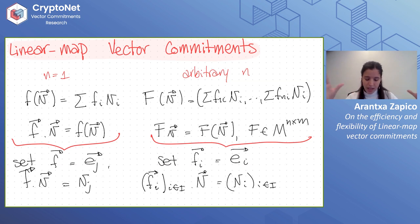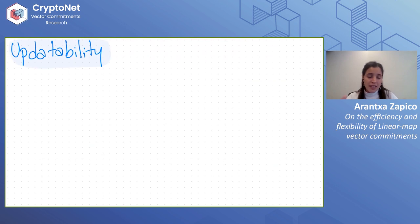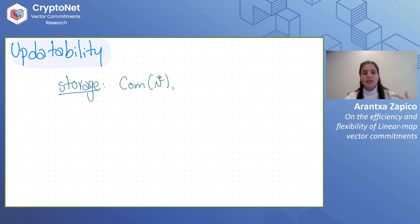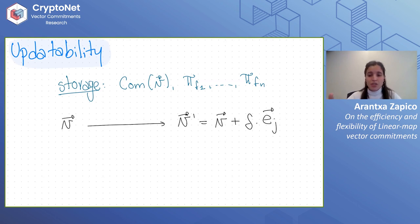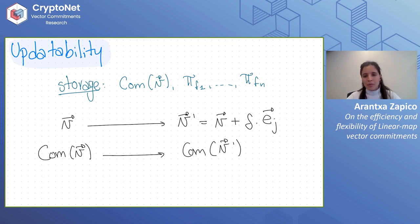We already have our definition of linear map vector commitments that encompasses individual openings, subset openings, and evaluating functions on our vector. In the proof of space setting, provers store a commitment to vector B (the digest) and may have pre-computed proofs. When we update our vector — say it changes in one position by some delta — we want to take the previous commitment and obtain a commitment to the new B without recomputing from scratch, and similarly update pre-computed openings.